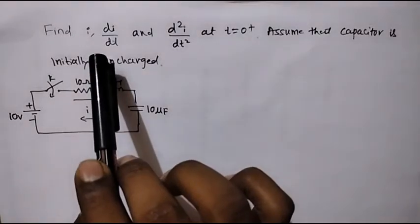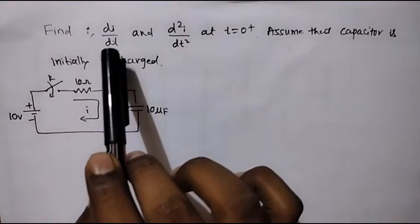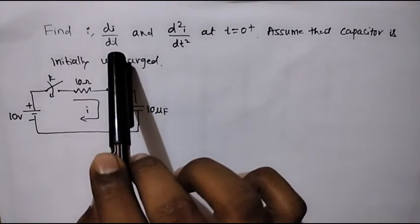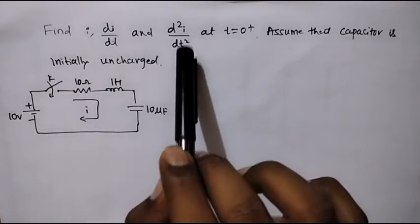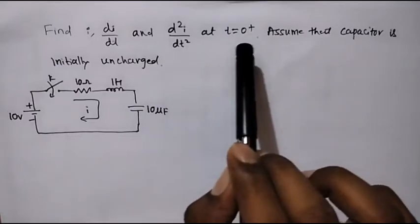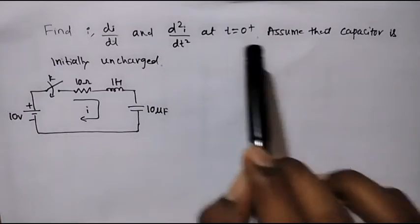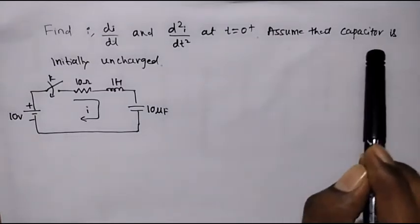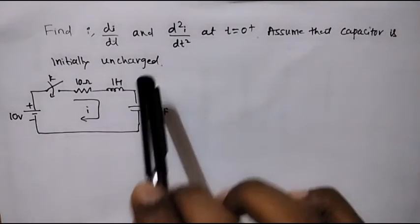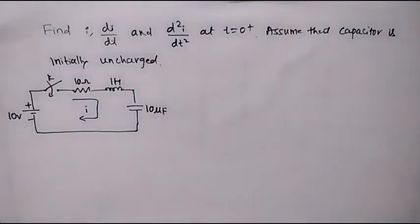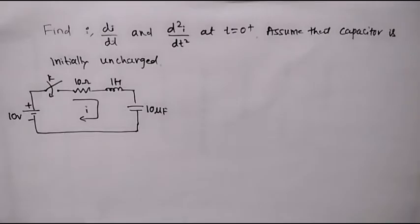Find i, di by dt, and d square i by dt square at t equal to 0 plus. In this circuit, we are supposed to calculate the current, its first derivative, and its second derivative at t equal to 0 plus.